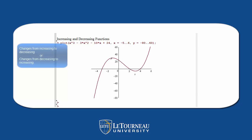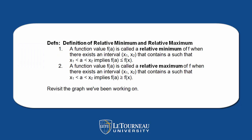This is the plot we've been looking at. Notice where the two arrows show up. Do you notice that the function is changing its behavior at those two points? So let's look at a formal definition of relative maximum and minimums.